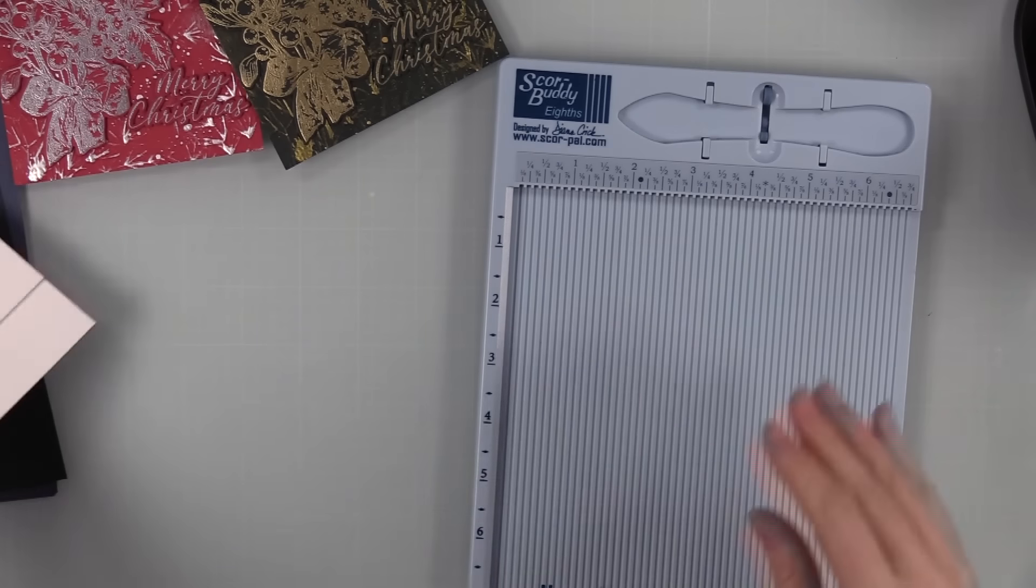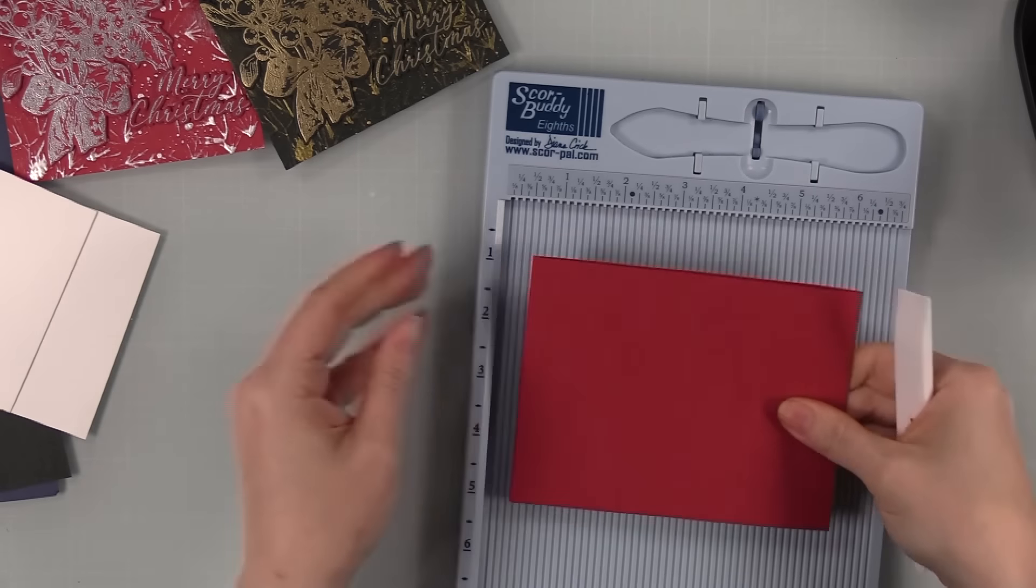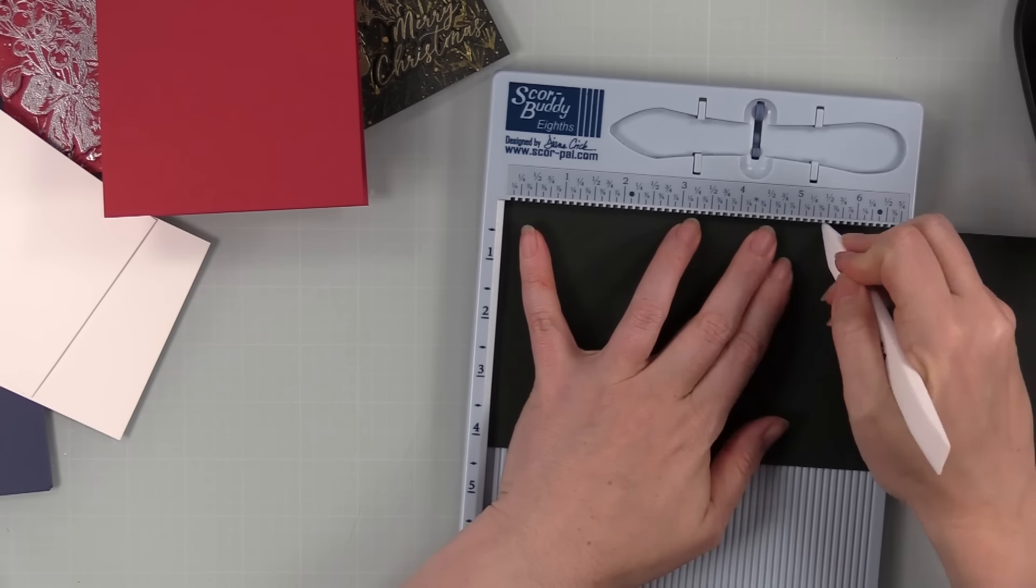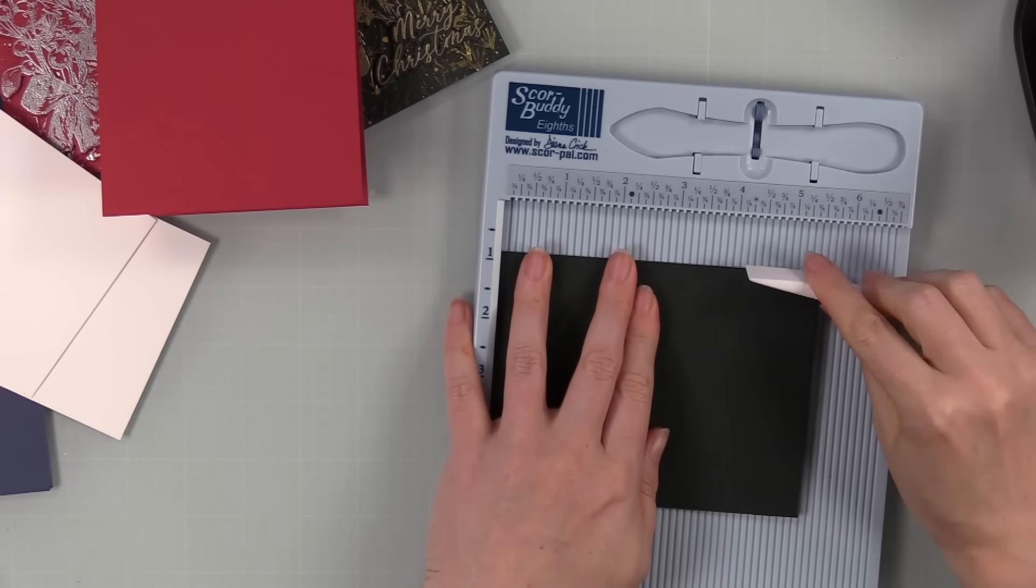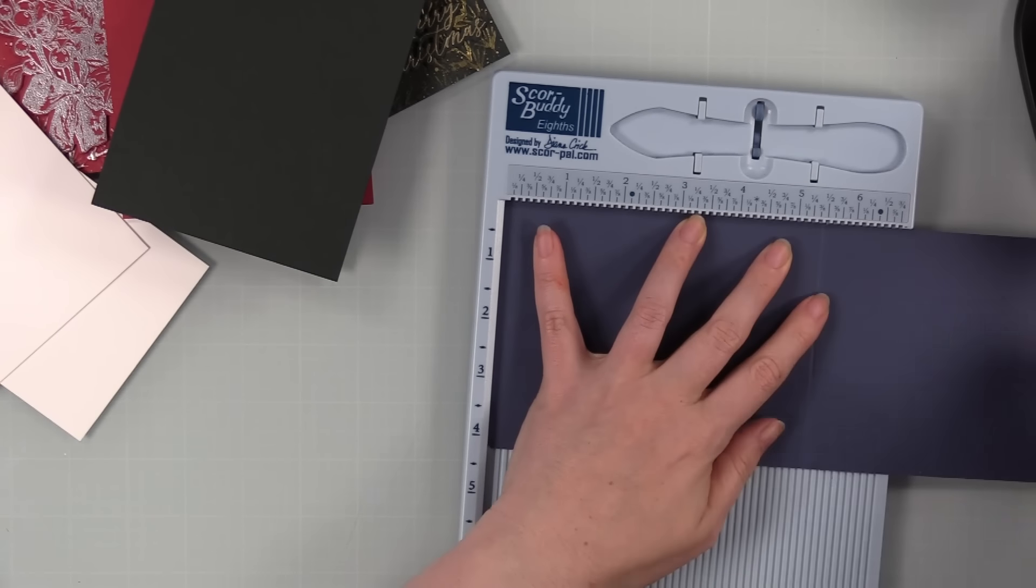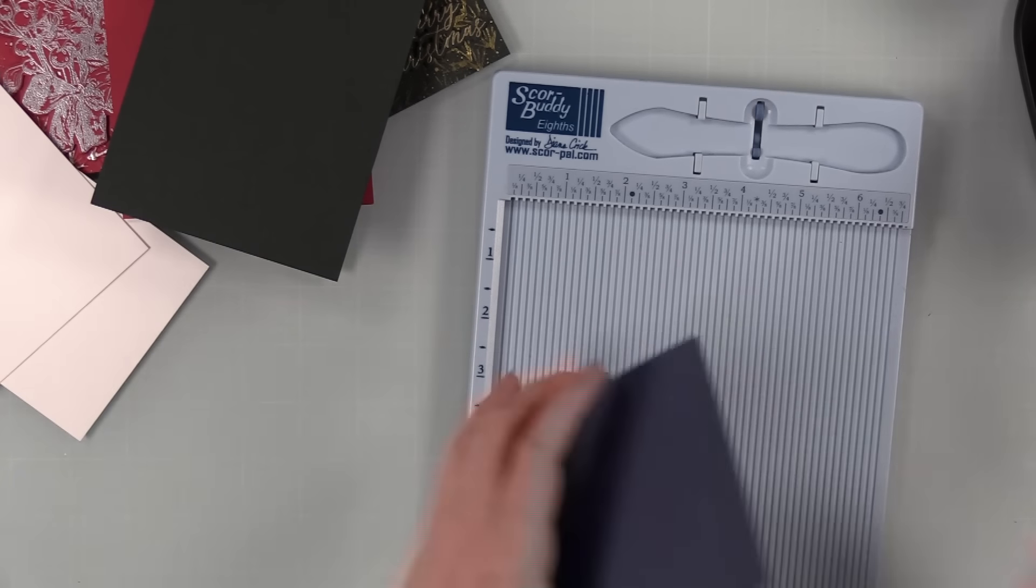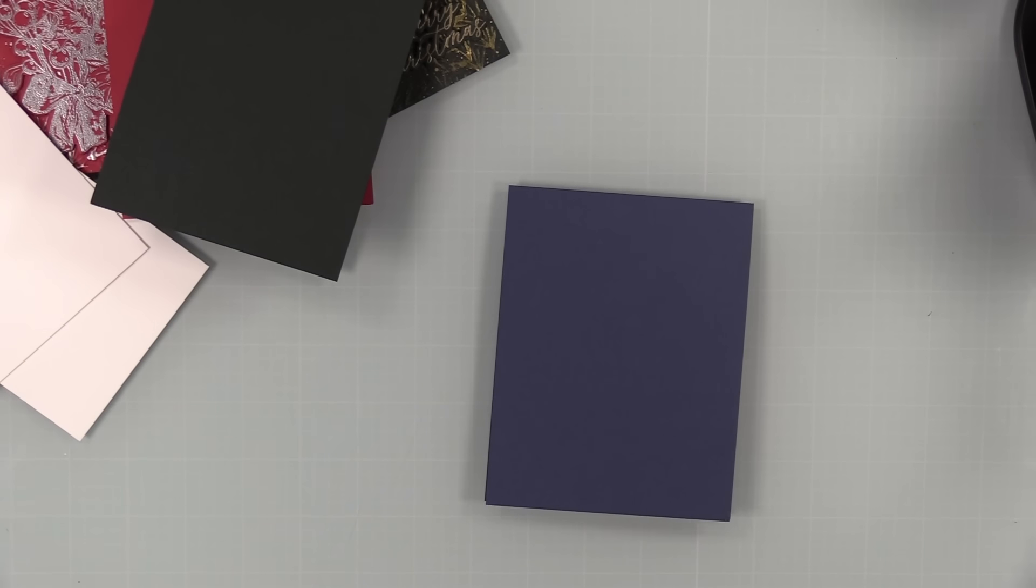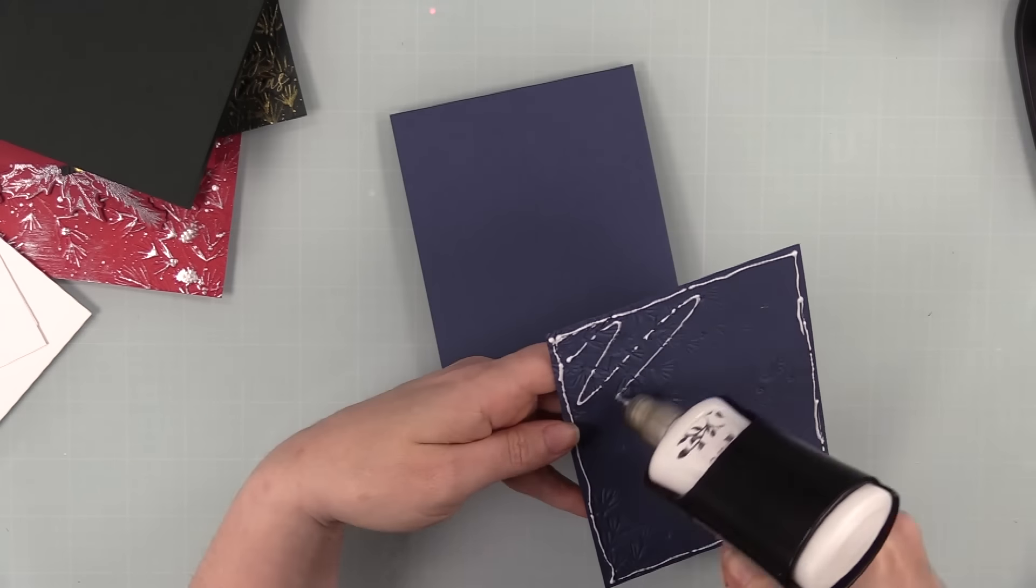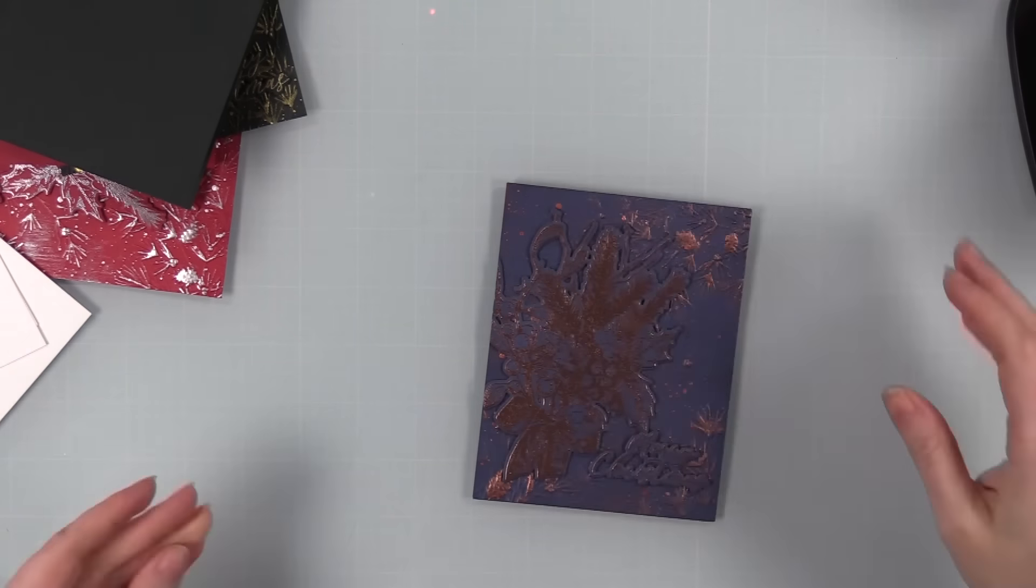Once those are done, my card bases - I'm going to score each of these at 5.5 inches and then I always reinforce the score line. All three of these card stocks, well all of Simon's brand card stocks are heavyweight. Teflon bone folder for the win. I don't know why I was thinking about this while I was editing this video. I remember when the teflon bone folders were released and I held out for a long time. I thought people were crazy. Best purchase when I finally caved and got one. Oh my goodness, such a big game changer. I love my teflon bone folder, zero regrets on that thing. I purchased mine well over a decade ago at this point. Anyway, scored all my card bases, reinforced that fold, adhered the card front to the card base with craft tacky glue.